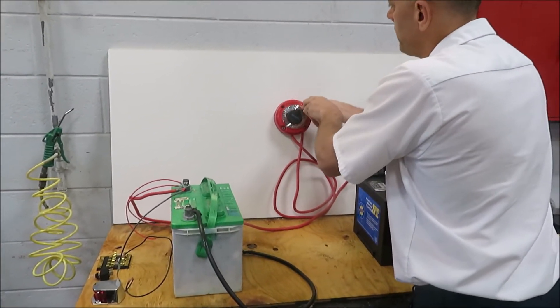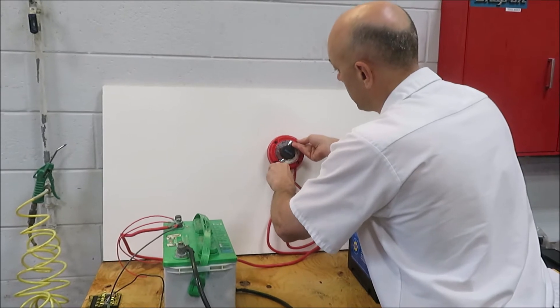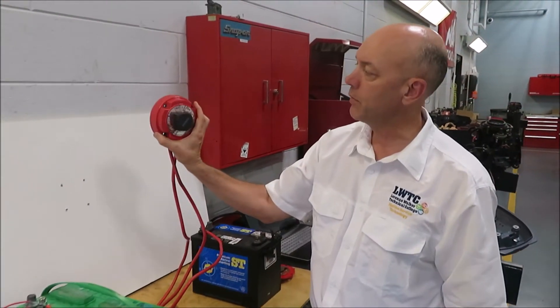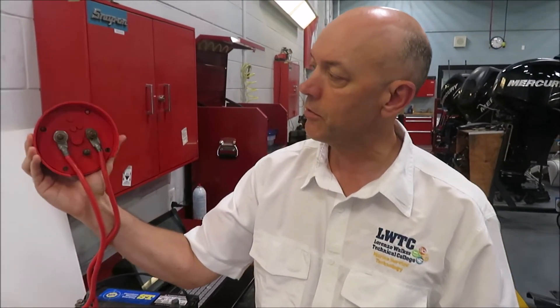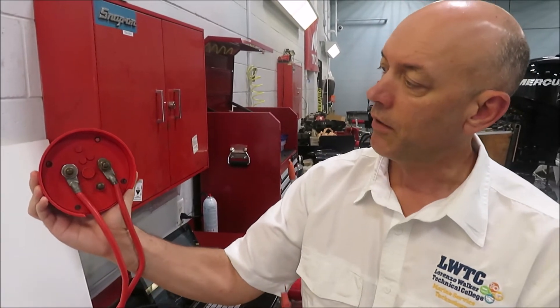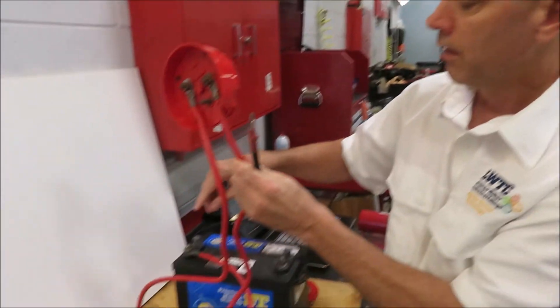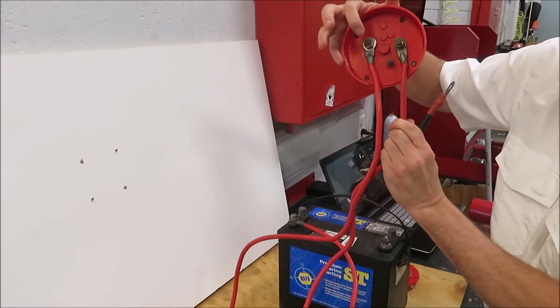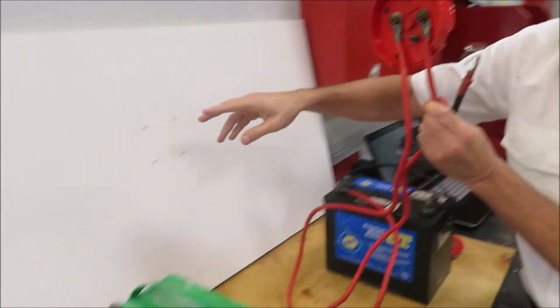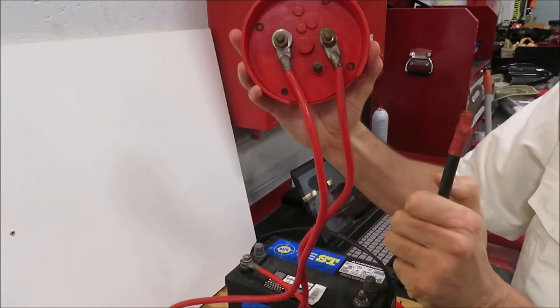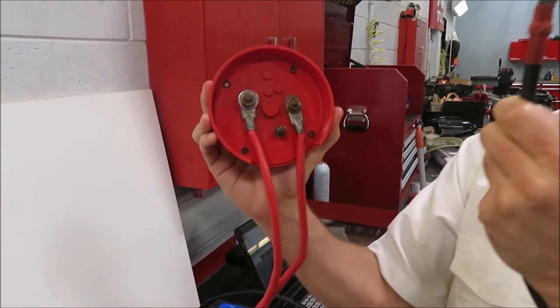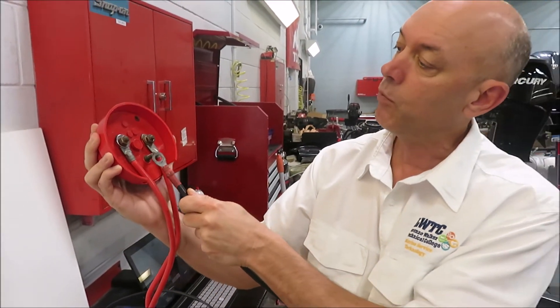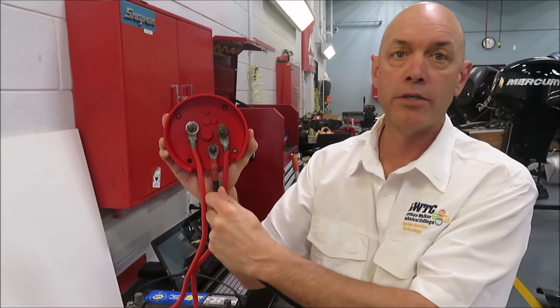So we're going to show you how to make the connections in the back. On the back of your battery switch, you're going to have three posts or terminals. The only thing that's going to get connected to these are going to be your positive wires. Battery one will be going to post one. Battery two will be going to post two. And the positive coming from the engine will get attached to the common terminal.